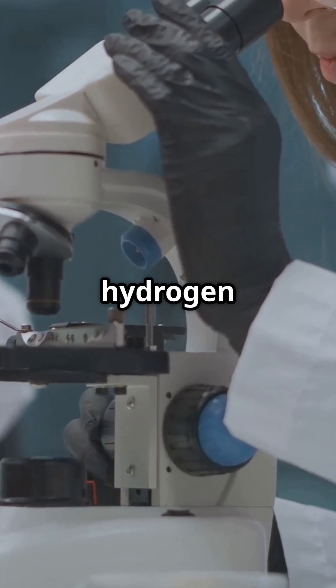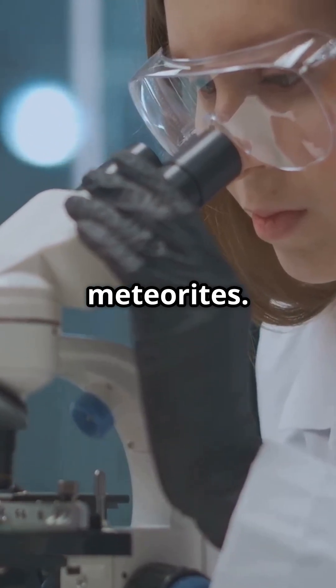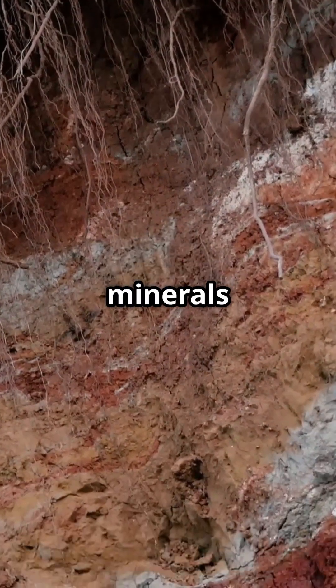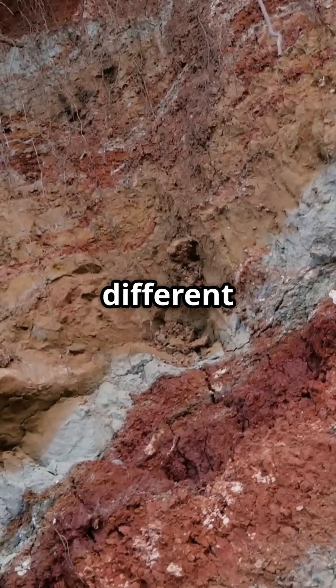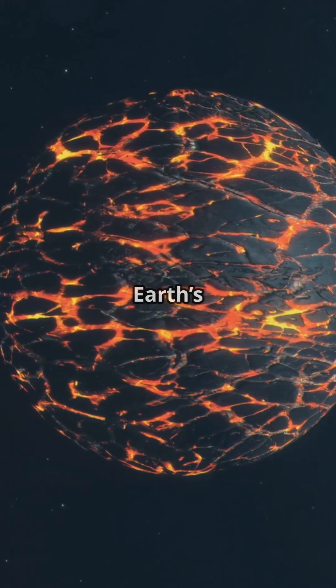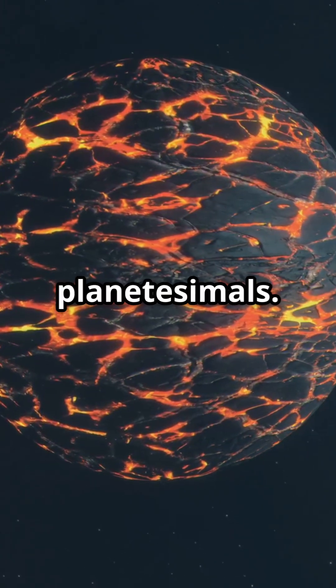Scientists analyzed hydrogen isotopes from Earth's mantle and compared them to meteorites. They found that Earth's deep mantle water, locked inside minerals since our planet formed, contains ratios different from asteroids. This suggests water may have been trapped during Earth's formation, carried inside early building blocks of rock, called planetesimals.